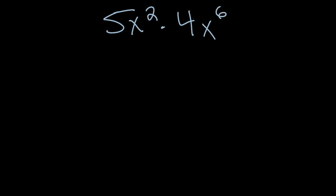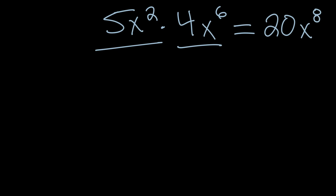By the end of this video it should be very easy to multiply the monomial 5x squared by another monomial. I'll give you the answer right now and then slowly walk you through questions that lead to why. The answer is 20x to the eighth. See if you can notice a pattern — what did we do with the 5 and the 4 to get 20, and with the 2 and the 6 to get 8?